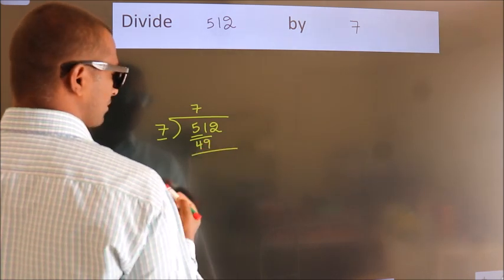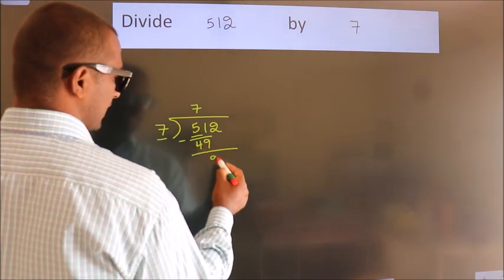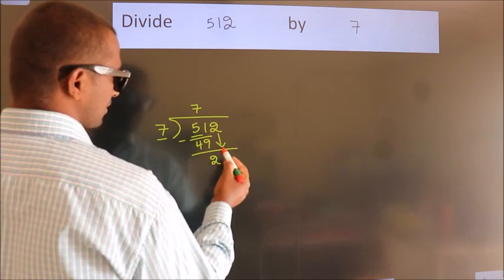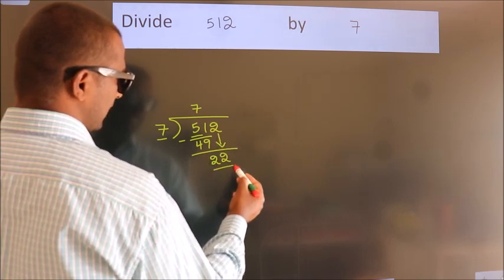Now we should subtract. We get 2. After this, bring down the beside number. So 2 down. So 22.